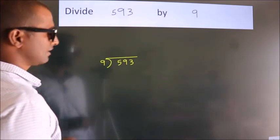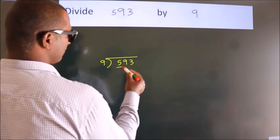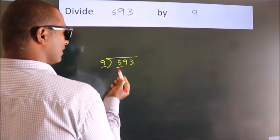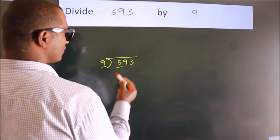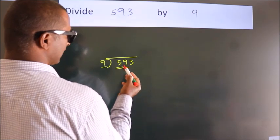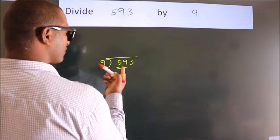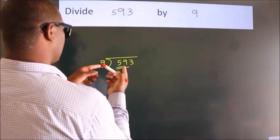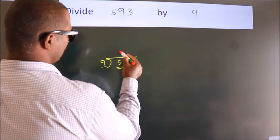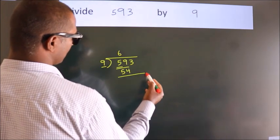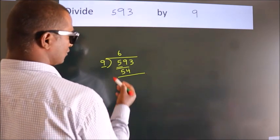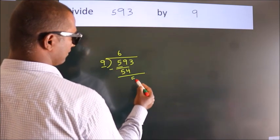Next, here we have 5, here 9. 5 is smaller than 9, so we should take two numbers: 59. A number close to 59 in the 9 table is 9 times 6 equals 54. Now we should subtract. We get 5.